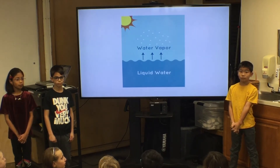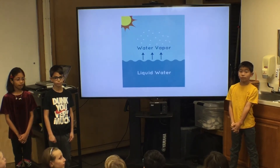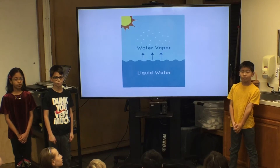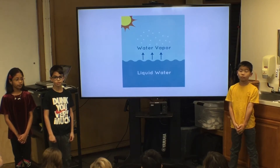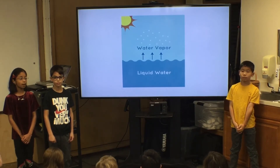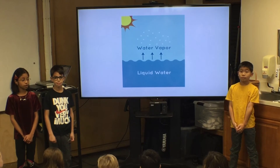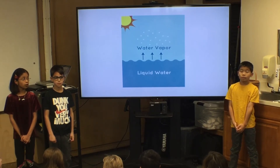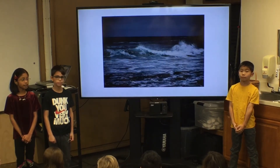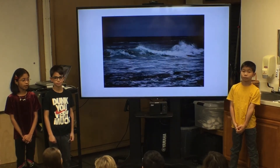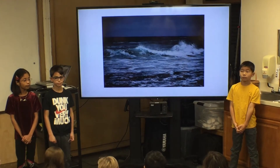A hurricane starts when warm water meets the air. That makes the air less dense so it rises. Cooler air pressure is replaced by the rising air molecules and the cycle continues. Hurricanes only form over really warm ocean water, known as 80 degrees Fahrenheit or warmer.